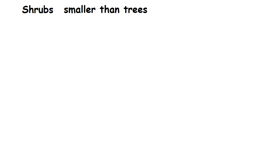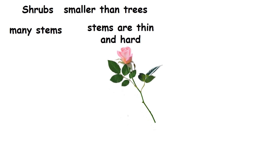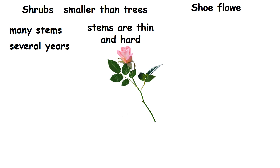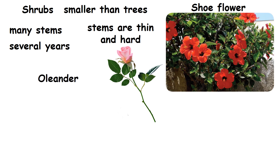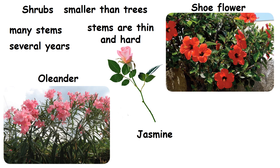Shrubs. Shrubs are smaller than trees. They have many stems that grow close to the ground. The stems are thin and hard. Shrubs live for several years. Examples: shoe flower, oleander and jasmine.